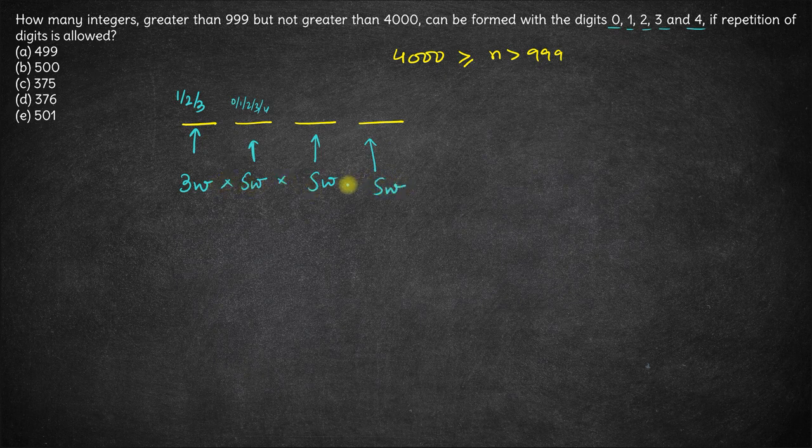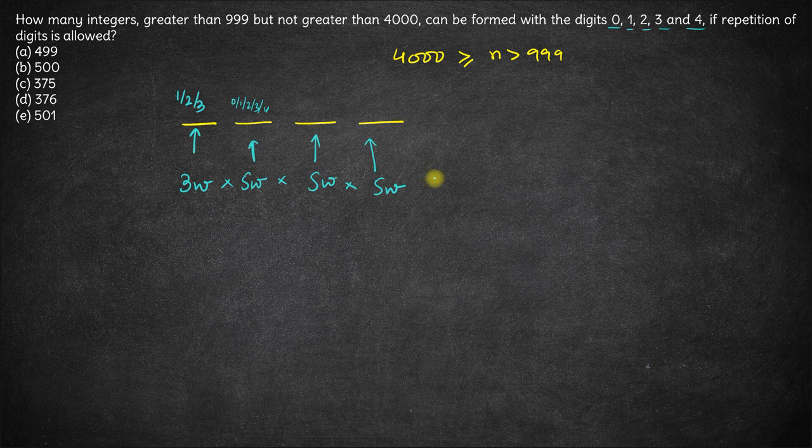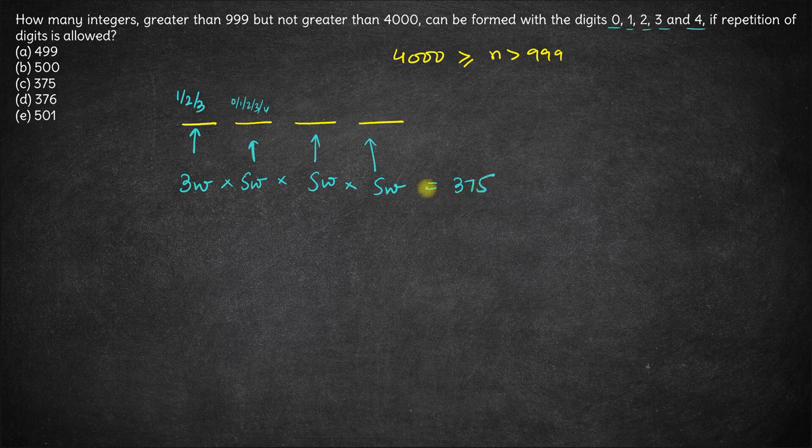So the total number of numbers that can be formed is 3 into 5 into 5 into 5. So 5 cube is 125, 125 into 3 is 375. These are the numbers starting with either 1, 2 or 3.